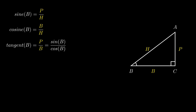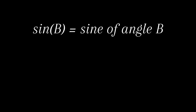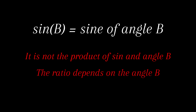There are three other trigonometric ratios which are reciprocals of the first three. Cosecant B, abbreviated as cosec B, is the reciprocal of sin B, giving the ratio of hypotenuse to perpendicular. Secant B, abbreviated as sec B, is the reciprocal of cosine B, giving the ratio of hypotenuse to base. Cotangent B, abbreviated as cot B, is the reciprocal of tangent, giving the ratio of base to perpendicular. It should be noted that sin B is short for sine of angle B and does not mean sin multiplied by B. The value of the ratio depends on the angle B, not on the length of the sides.